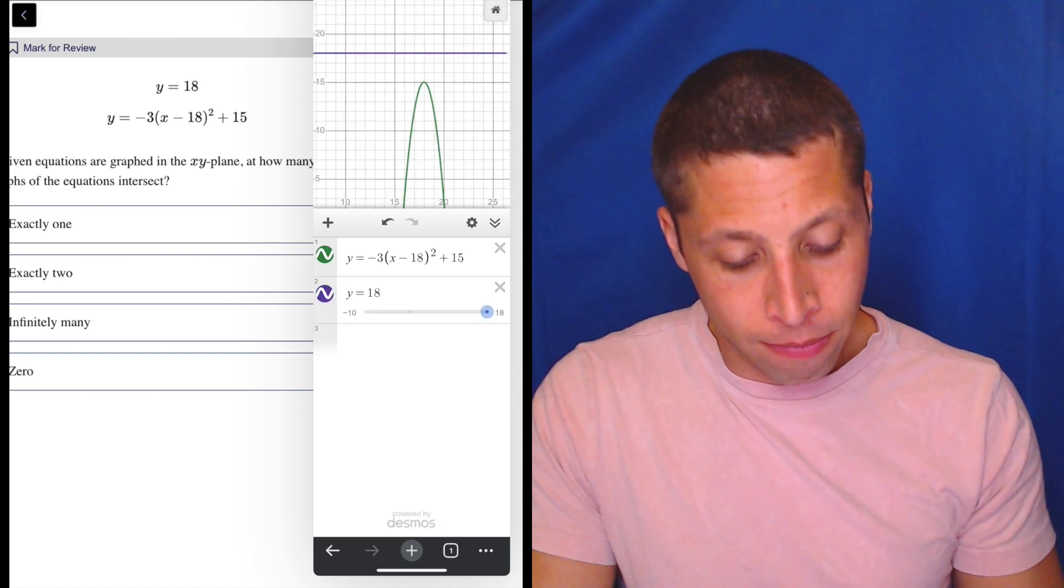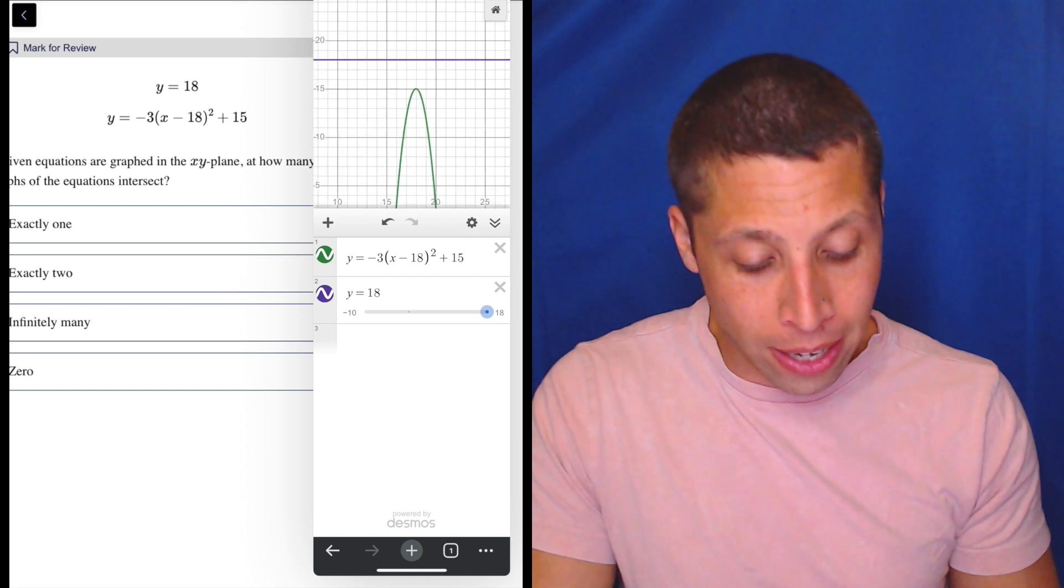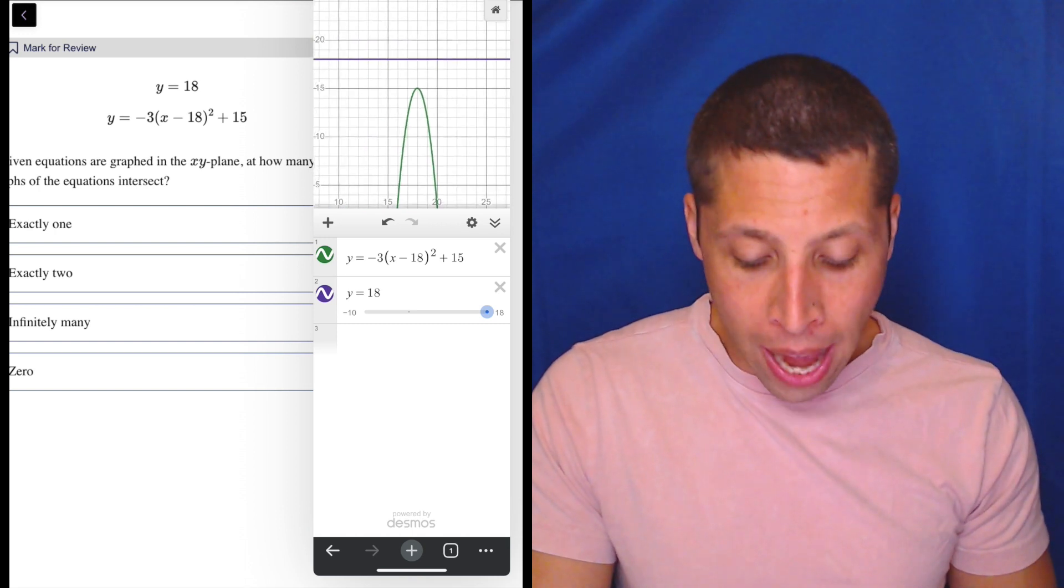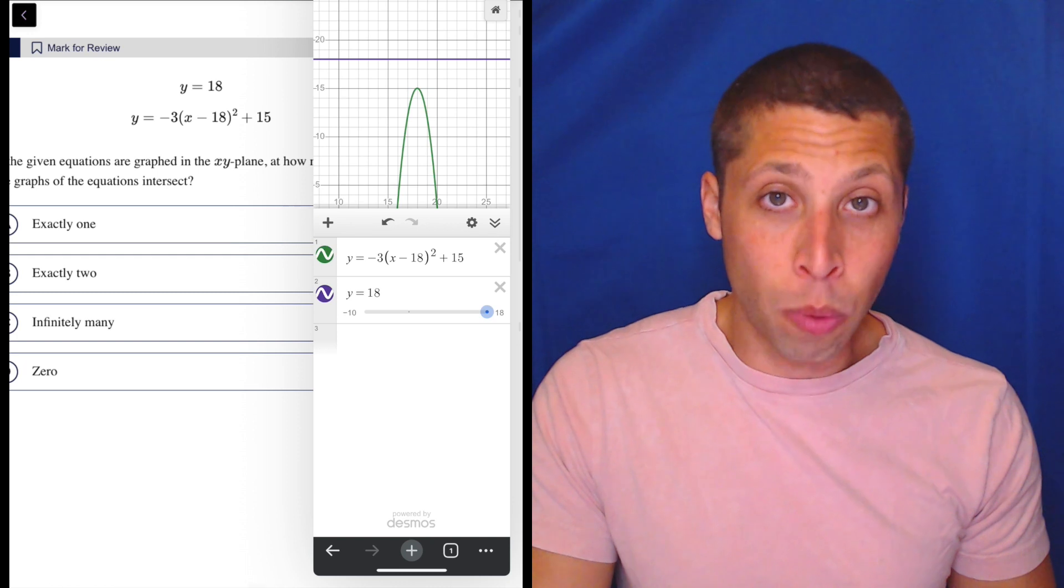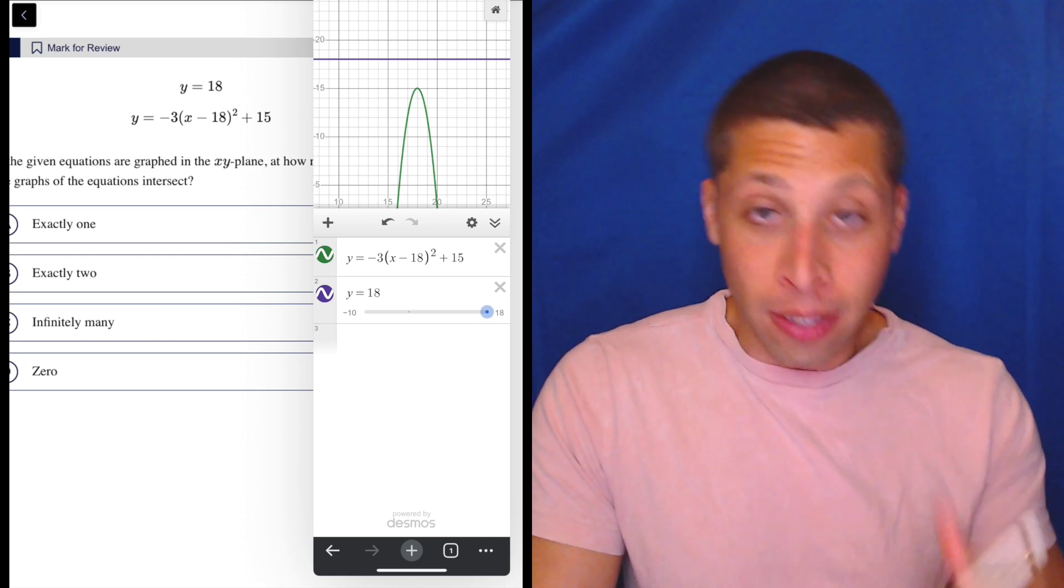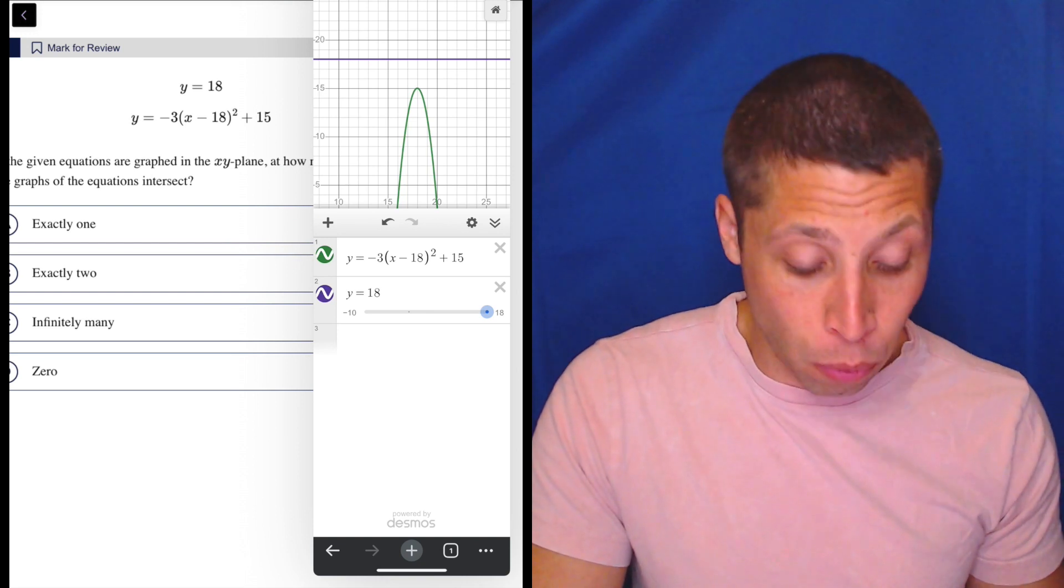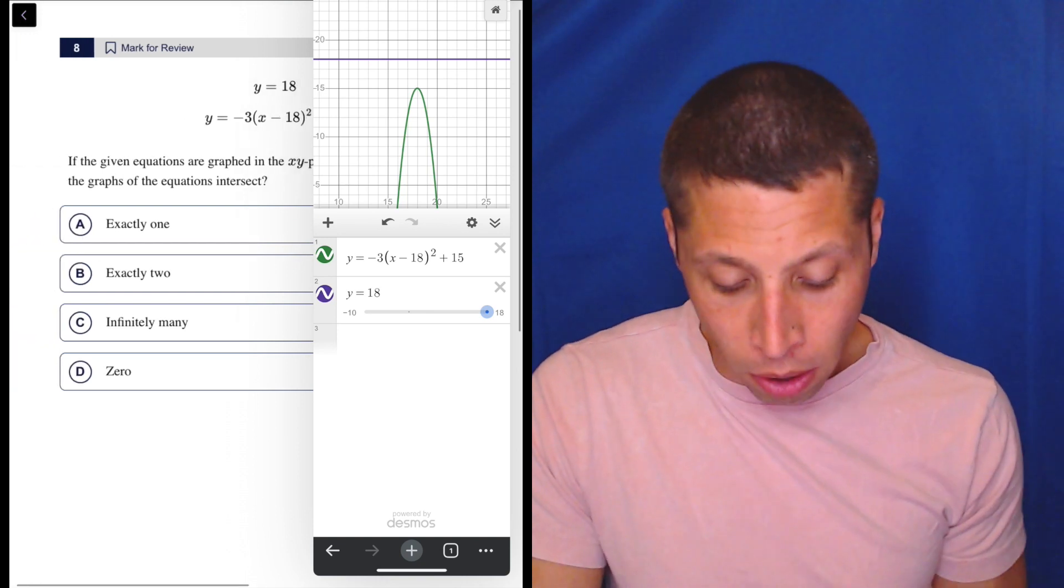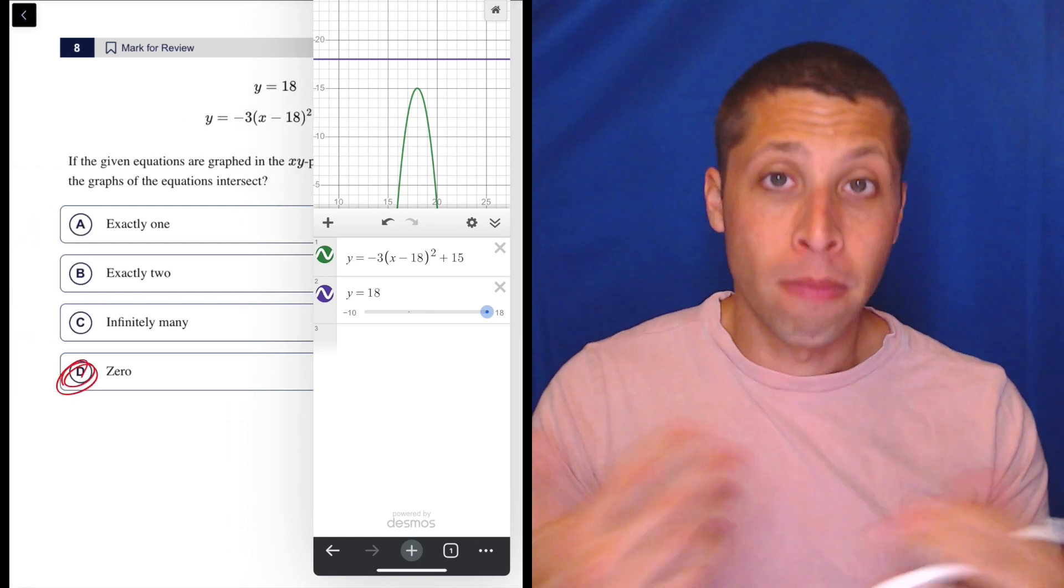Now, where is this equation? We just got to scroll around. You can zoom out until you find it. But there it is. And basically, when they ask for the number of intersections, we're just looking, do these things intersect? And they don't. We can see that the parabola turns back around before it gets to our line. So there are zero solutions. Done. Move on.